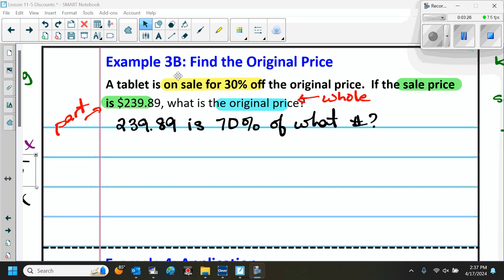Here's example 3B, again finding the original price. It says a tablet is on sale for 30% off the original price. If the sale price is $239.89, what is the original price?